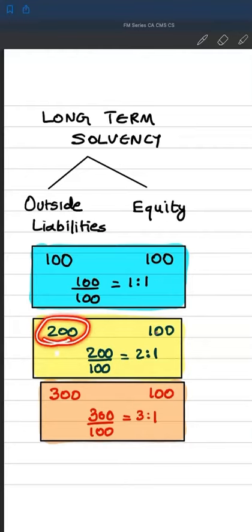Look at scenario two. Outside liabilities are 200, equity is 100. So 200 by 100, ratio is 2 is to 1. It means two-thirds is the liabilities, that is 67%, and one-third is the equity, which is 33%. Here equity was 50% but it has come down to 33%.